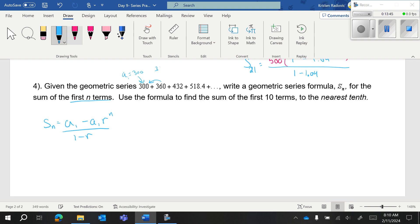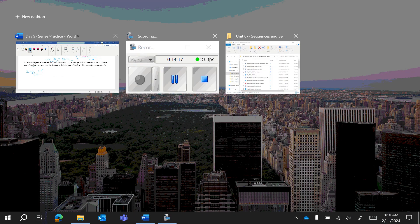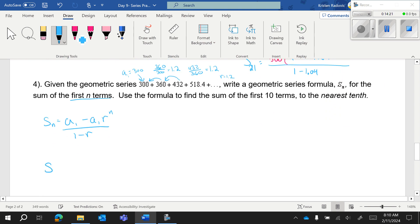You're going to do 360 divided by 300, which is 1.2. And then you're going to go backwards again, and you're going to double check yourself. 432 divided by 360. And that is also 1.2. So that means that r is equal to 1.2. So I have S sub N equals A sub 1, which is 300, minus 300 times 1.2 to the N over 1 minus 1.2. This is your first piece. They just wanted the formula.